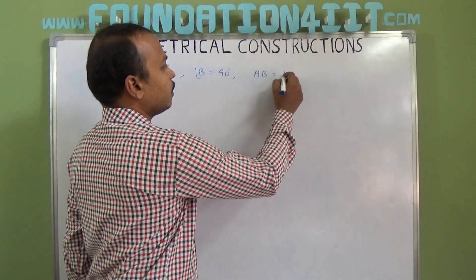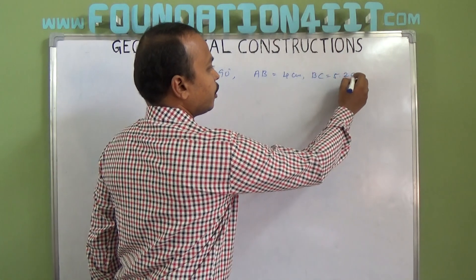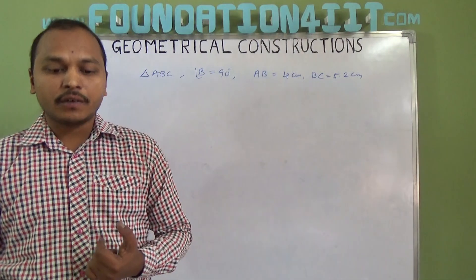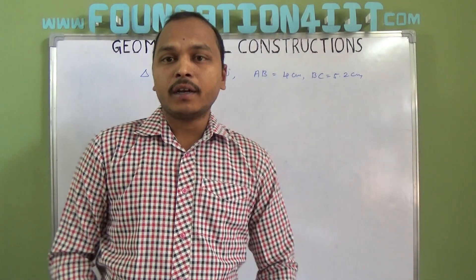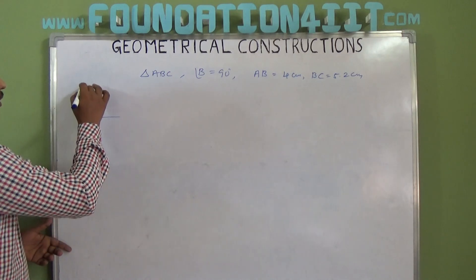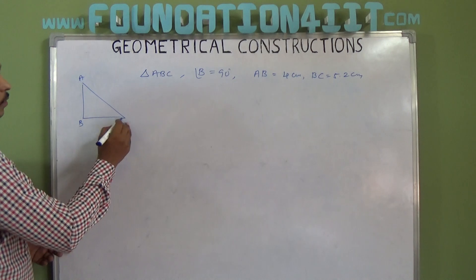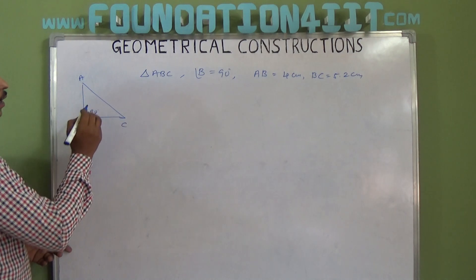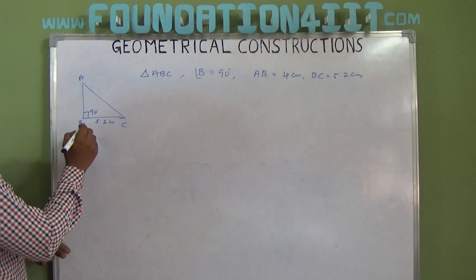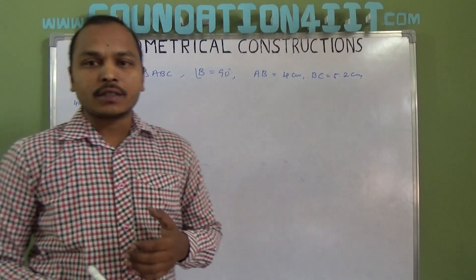AB is 4 centimeters and BC is 5.2 centimeters. So when the sides forming the right angle are given, how do we construct the right-angled triangle? See this rough diagram of ABC: angle B is 90 degrees, BC is 5.2 centimeters, and AB is 4 centimeters. Now we need to construct this triangle.